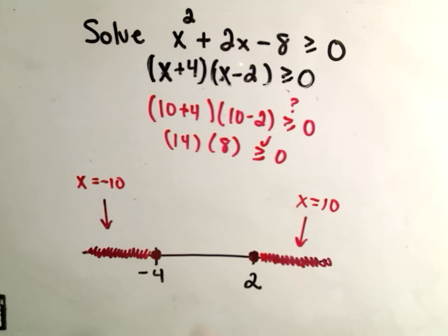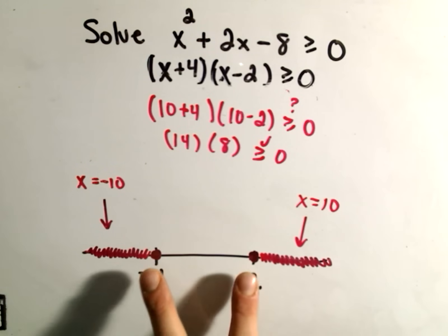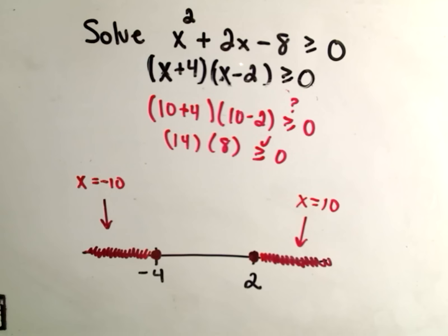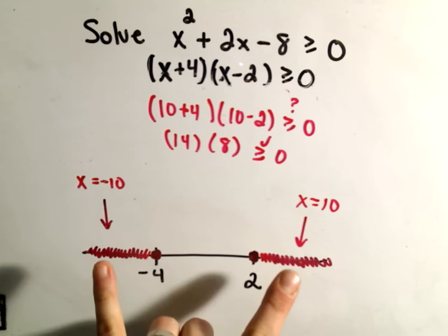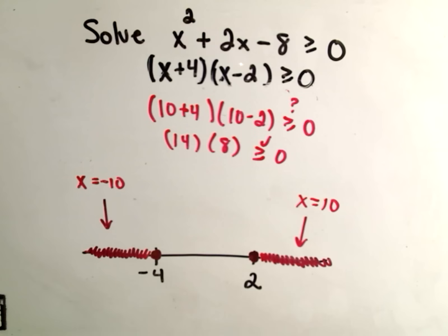So a couple things to point out. One, if you have two distinct solutions like we do here on these quadratic inequalities, one of two things will happen. Either the outside parts will work or the inside part will work.